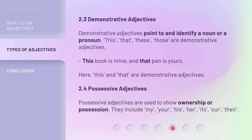This book is mine, and that pen is yours. Here, this and that are demonstrative adjectives. 2.4 Possessive Adjectives.